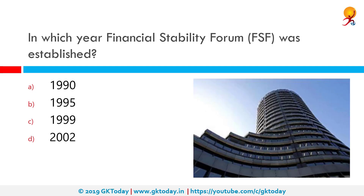In which year was the Financial Stability Forum established? The correct answer is 1999. The Financial Stability Forum was a group consisting of major national financial authorities such as finance ministries, central bankers, and international financial bodies. It was first convened in April 1999 in Washington.